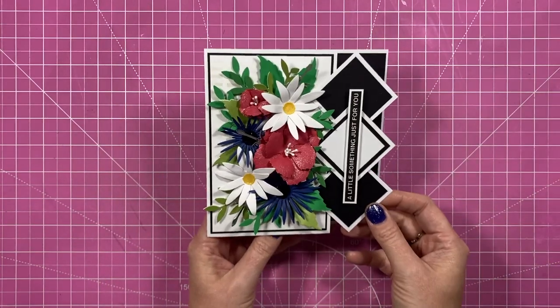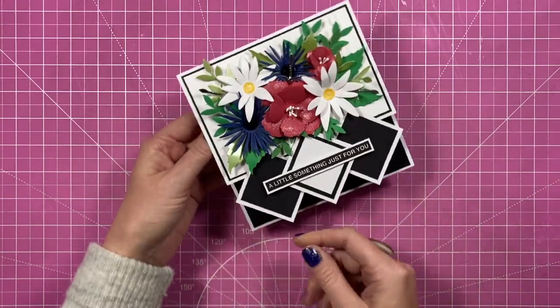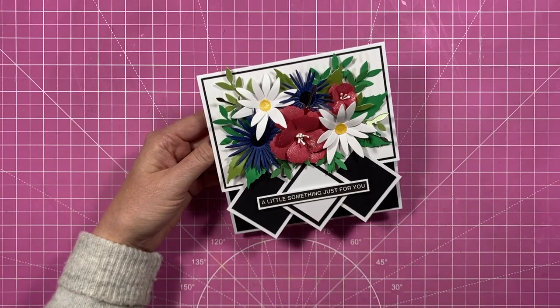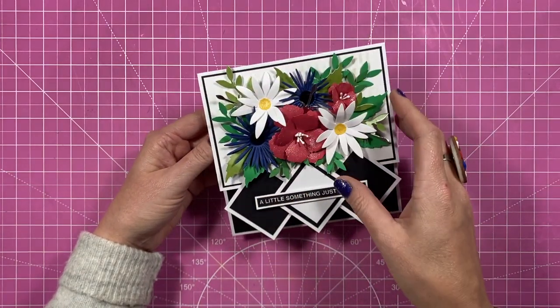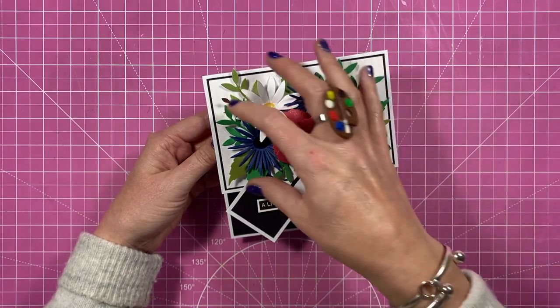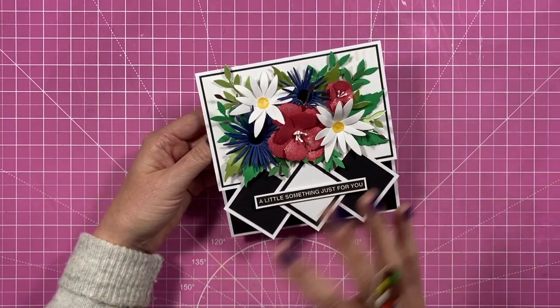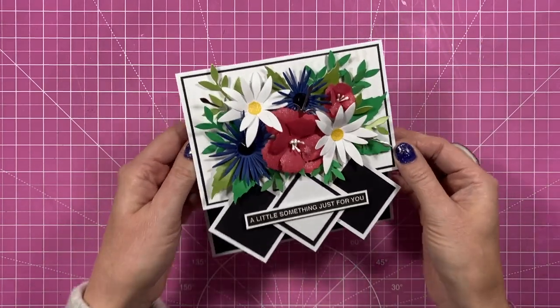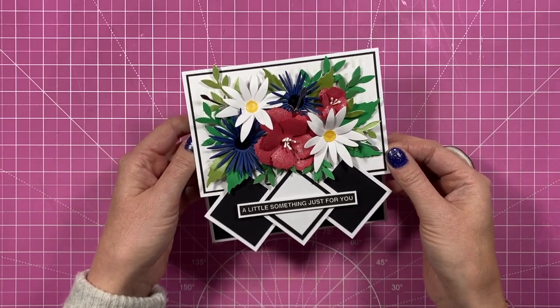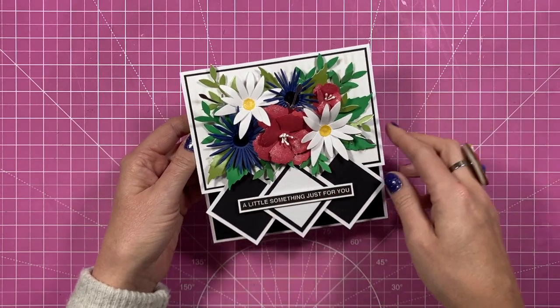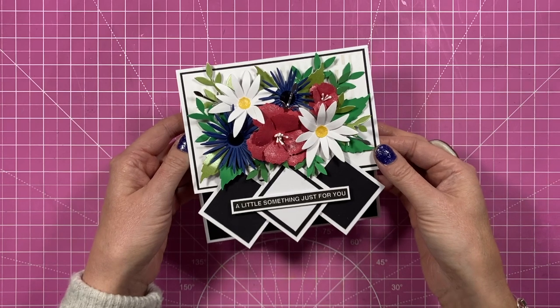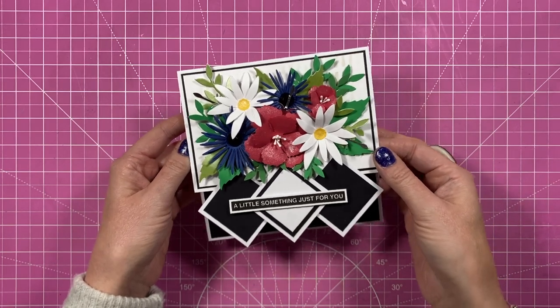I think that looks really nice as well so it's entirely up to you and then I've just finished it with my sentiment along the bottom there but you could have pattern paper at the top, you could have your big sentiment up here or topper and have pattern paper down here. There's so many ways to decorate this but I am going to make another one like this one today because I've got leftover pieces and I'm actually giving this one away already so I want to have another one in my stash. So let's get started.